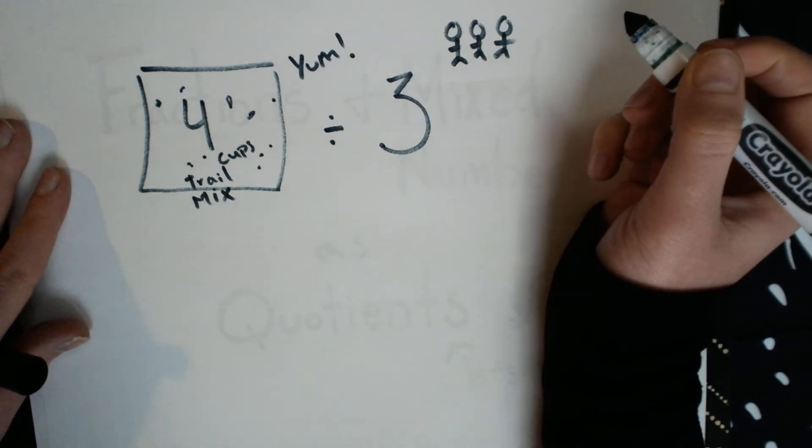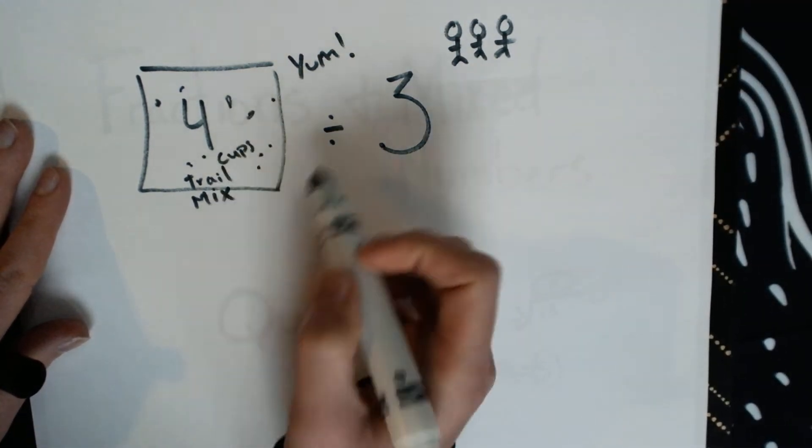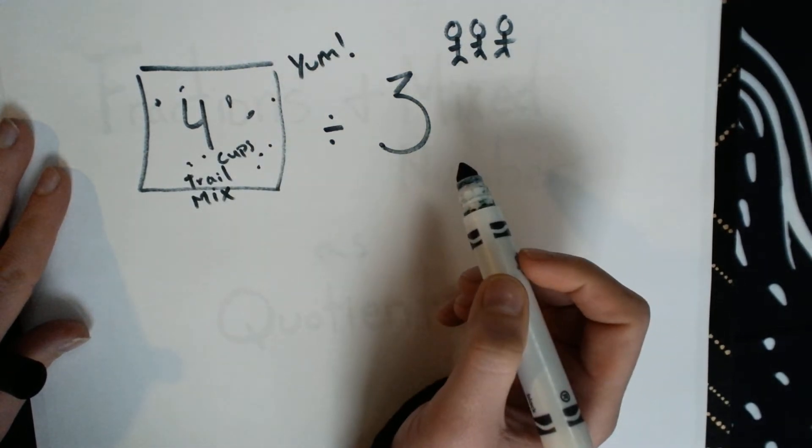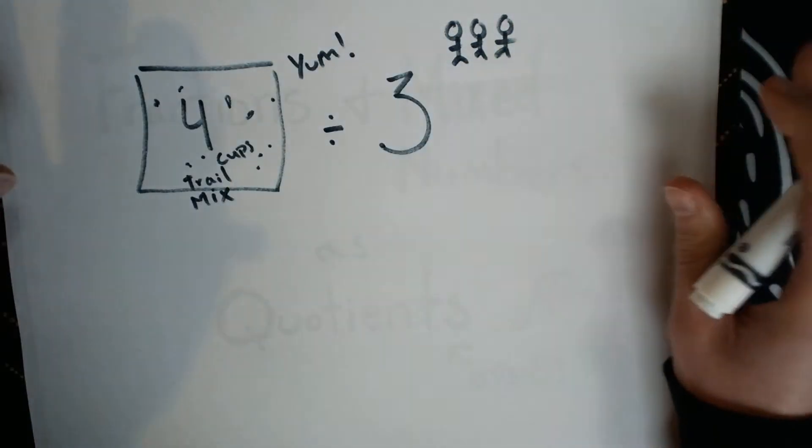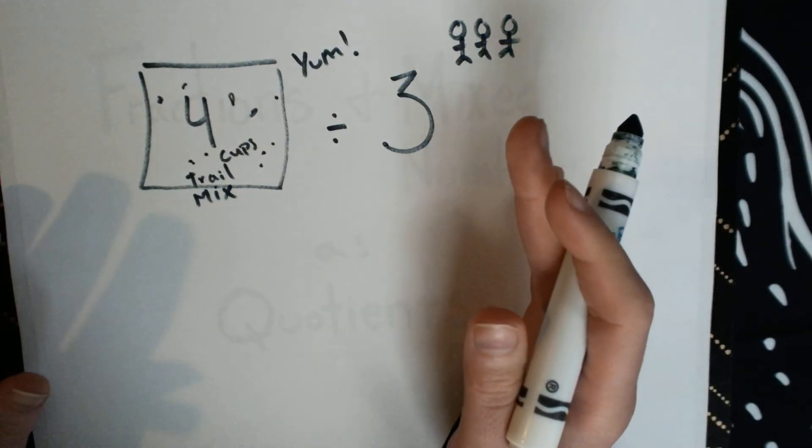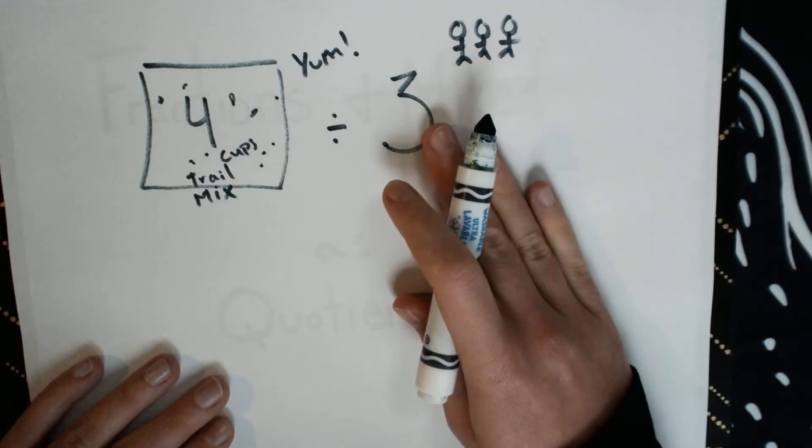Notice that when I wrote this, I put the 4 cups of trail mix first, and then I said divided by 3, because we're not going to split up the people and give it to the trail mix. That'd be crazy. We're going to split up the trail mix and give it to the people.